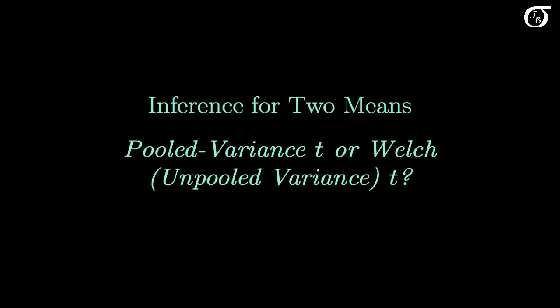Let's look at the question: should we use the pooled variance t, or Welch's unpooled variance t, in inference procedures for two means?